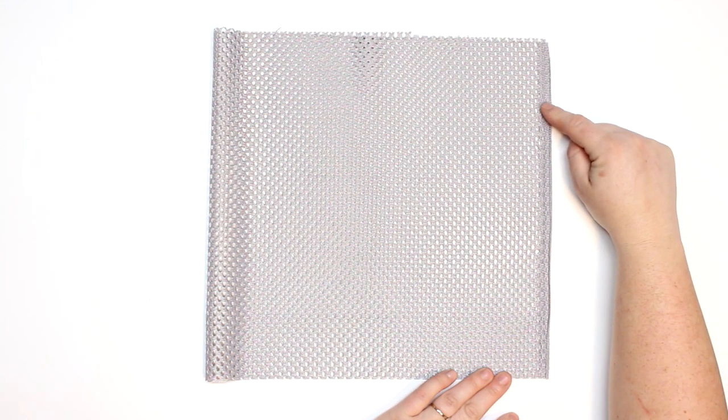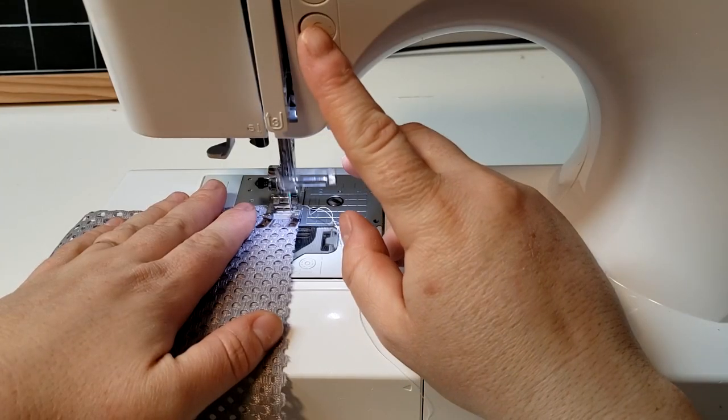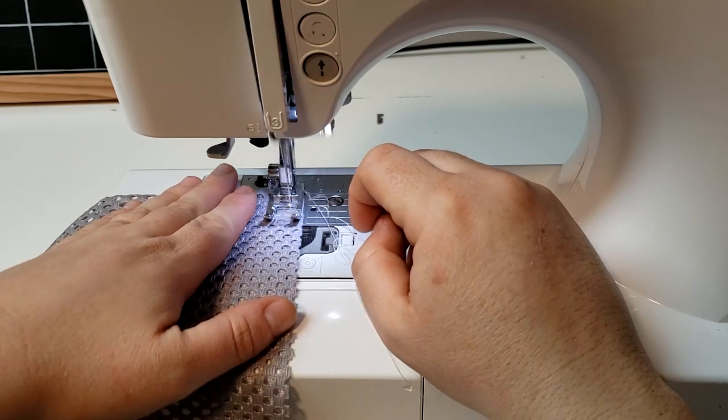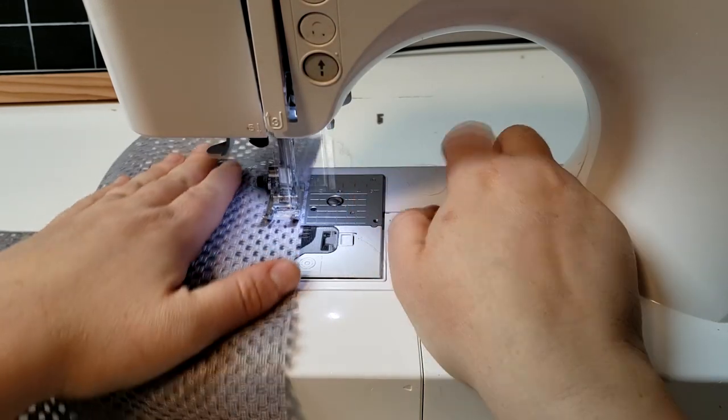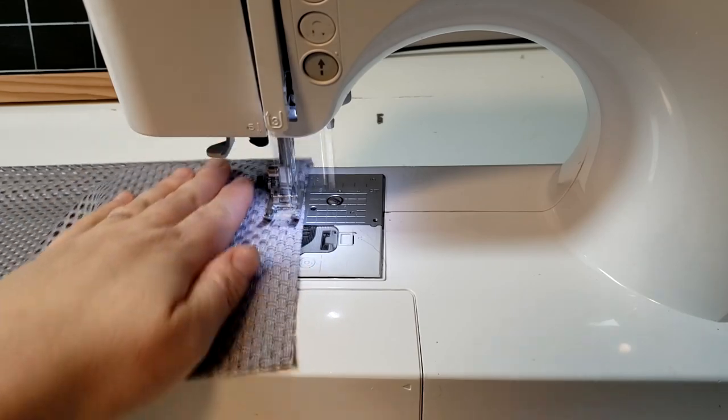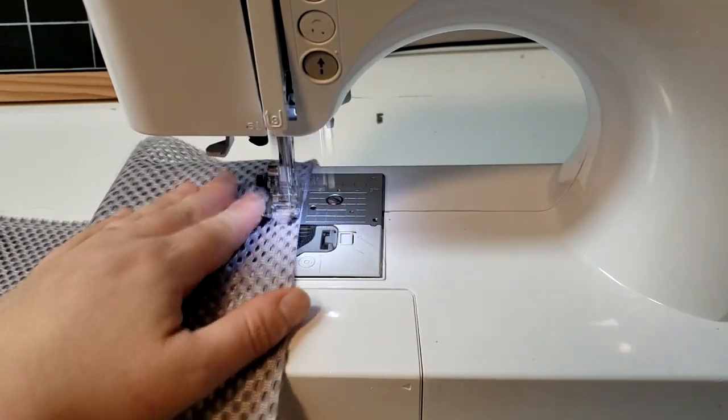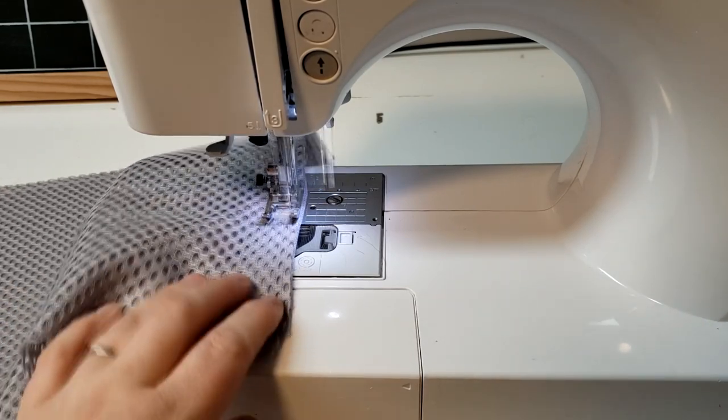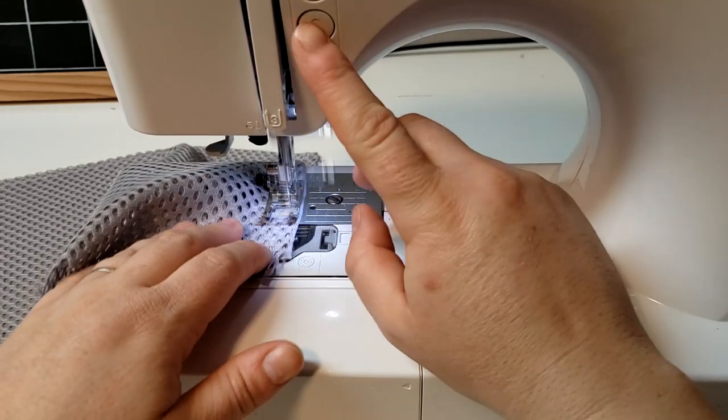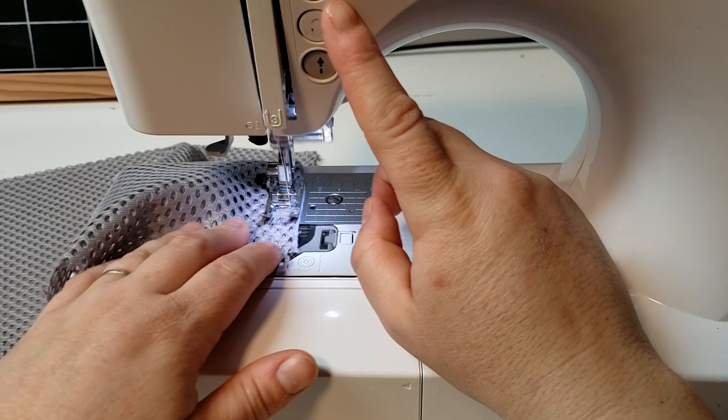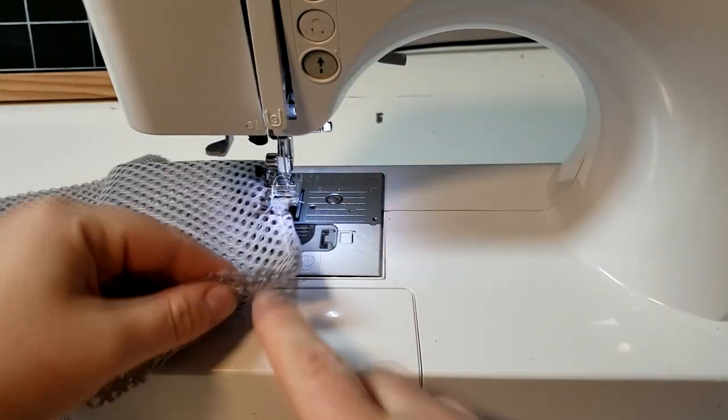So I'm just going to sew down the bottom and then I'm going to sew up the one side and I'm going to stop about an inch and a half from the top. And that's just where we're going to be hemming the top of the bag.